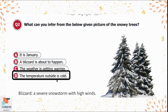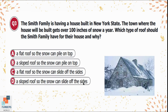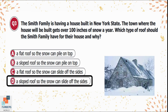Question 3: The Smith family is having a house built in New York State where the town gets over 100 inches of snow a year. Which type of roof should they have and why? Option A: a flat roof so snow can pile on top. Option B: a sloped roof so snow can pile on top. Option C: a flat roof so snow can slide off. Option D: a sloped roof so snow can slide off the sides. They should choose a sloped roof so the snow can slide off — option D is correct.